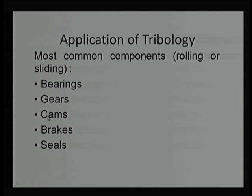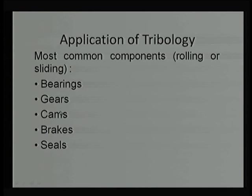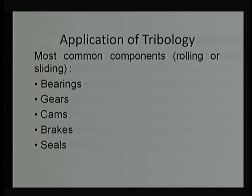In fact, all these components can be categorized as bearings. The question is why we write five different categories — bearings, gears, cams, brakes, and seals separately. This classification is from a functional point of view, not from a fundamental point of view.